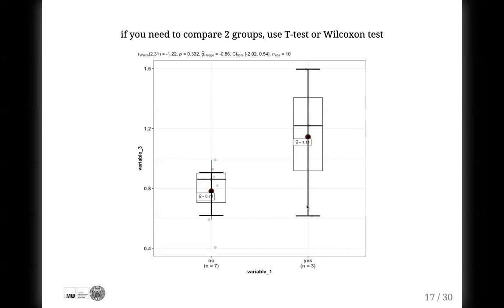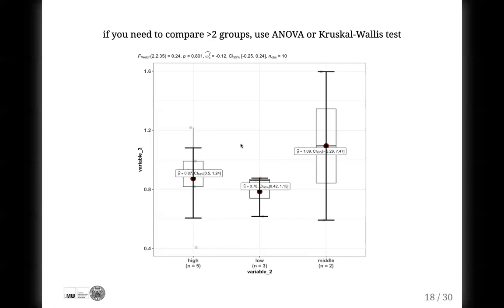Sometimes you have more than two groups. What do you do? You actually do the same things. You check for normality first, then check for homogeneity of variances — whether the variances are similar or not. If the data is normally distributed, you use the ANOVA test. If the data is not normally distributed, you use a Kruskal-Wallis test. All these tests do is compare different groups.